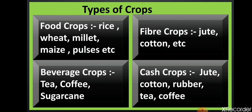Next is fiber crops — crops from which we get thread or fibers. In this category we are going to learn about jute and cotton. The next type is cash crops. Some beverage or fiber crops are also considered cash crops. Cash crops are grown for commercial purposes — to sell in the market and get money in exchange. Cash crops include jute, cotton, rubber, tea, coffee, and sugarcane. In this chapter we will also learn about the climatic conditions necessary for growing these crops and which countries or states of India are the leading producers.